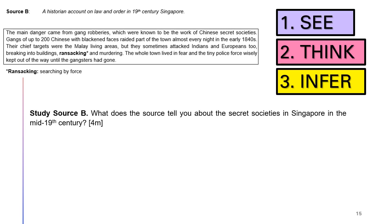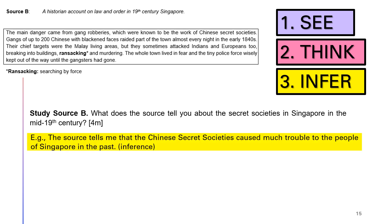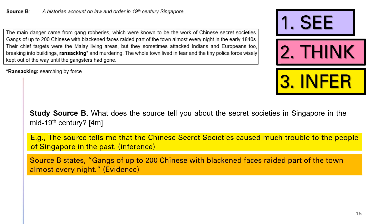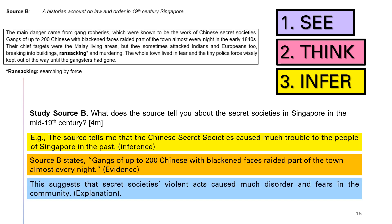After you have done your thinking routine — your See, Think, and Infer — how do we write it down? First, you infer: it tells me that the secret societies caused a lot of trouble to the people. Second, give evidence from the source. Here, instead of describing like you did with the picture in Source A, you actually quote from the source, because these are all evidences. And what do you explain? Now you know they are troublemakers and you have evidence, so what does it suggest? It suggests that they were quite violent and they caused a lot more disorder as well as fear.